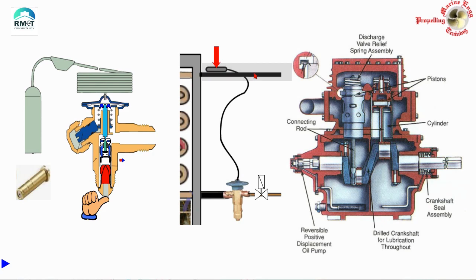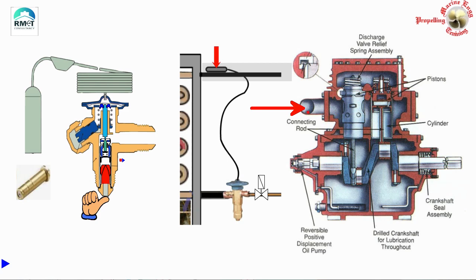Now let us move on to the next topic: liquid returning back to the compressor. The fact remains that liquid should not return, but the reasons people associate with this phenomenon may not be fully accurate. Many people presume the general feeling is that when liquid enters, it will go into the piston and break it — which is actually not true. Liquid entering the compressor from the suction pipe may have some liquid particles; it is not entering the cylinder directly but may get accumulated at a point. The real issue is that the refrigerant communicates with the crankcase and they are at the same pressure — and that is where the damage occurs.